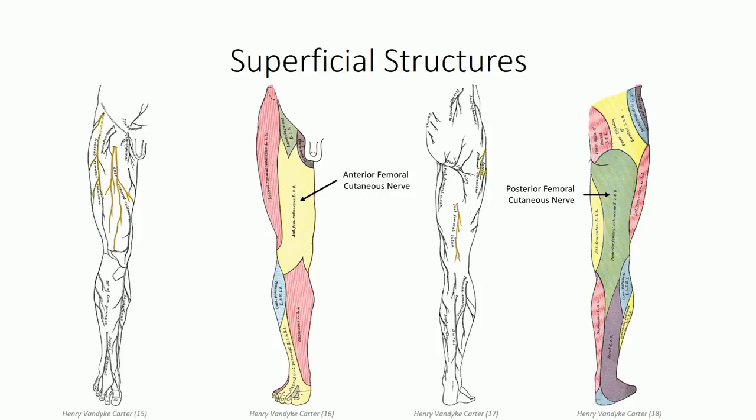Finally, the lateral femoral cutaneous nerve is another separate branch off the lumbar plexus. We'll see this nerve more completely when we dive into the posterior abdominal wall, where it emerges in the pelvis between the psoas major and the iliacus muscles. From here, it will course over the top of the iliacus to emerge through the femoral triangle, just posteromedial to the anterior superior iliac spine, supplying the skin over the lateral aspect of the thigh.